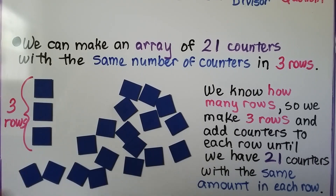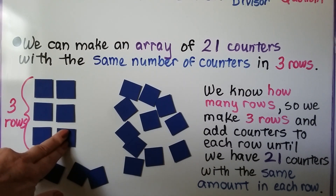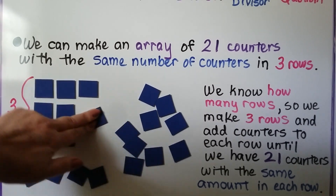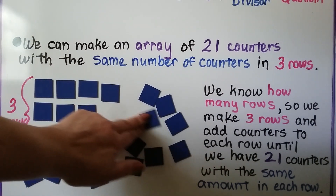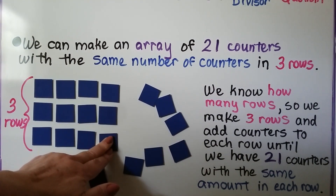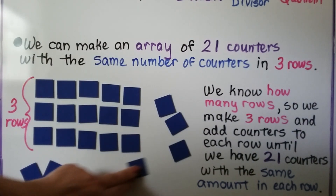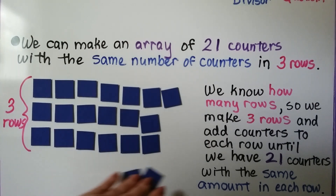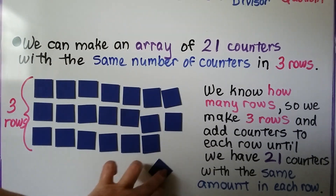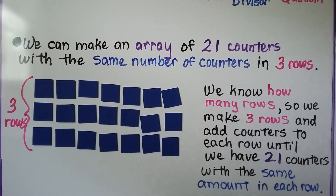We keep filling the rows with the same amount of counters until we have 21. Starting with 21 counters, we begin putting them into rows — now we have 3 rows with 2 in them, then 3 rows with 3 in each row. We keep adding equally until all counters are placed with the same number in each row. We end up with 7 in each row.